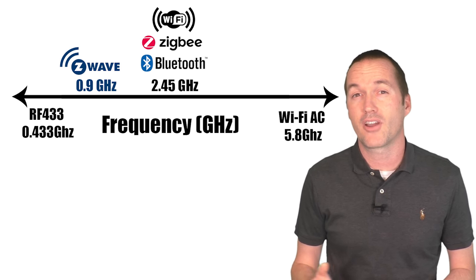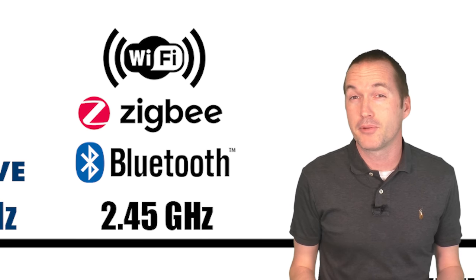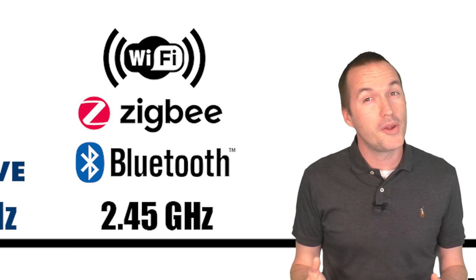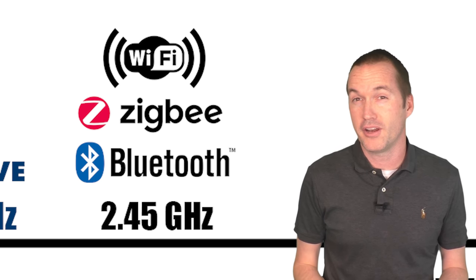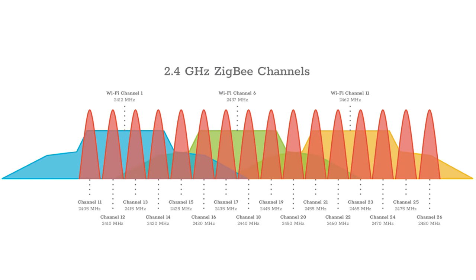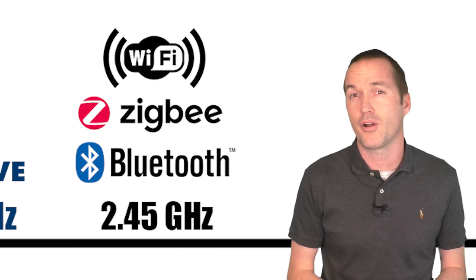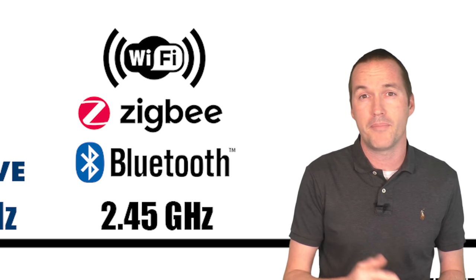When many devices are trying to communicate on the exact same frequency, the data can get messy and messages can get lost — similar to trying to have a conversation in a crowded restaurant. Zigbee, WiFi, and Bluetooth all communicate on the 2.45 gigahertz band, meaning the potential for interference is high. In actuality they can tune to slightly different frequencies within that band called channels to reduce interference, but even with different channels, too many devices constantly broadcasting can lead to faults and dropped messages.